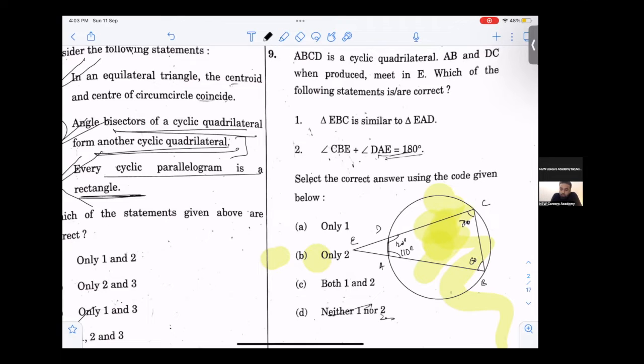EBC is similar to triangle EAD. E is the same. Yes, we agree that E is the same. EBC is similar to EAD. If it is 110, then it will be 70, which is not correct.